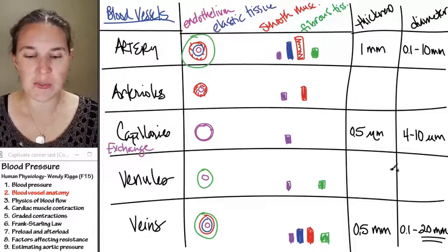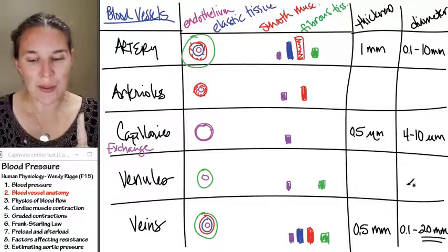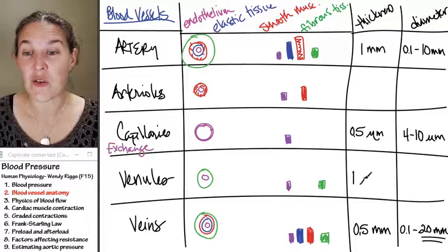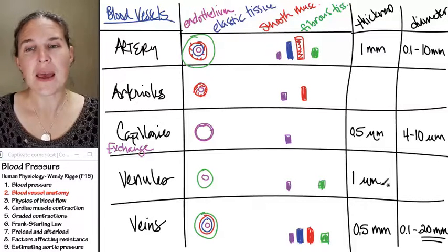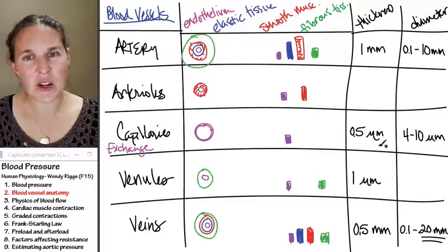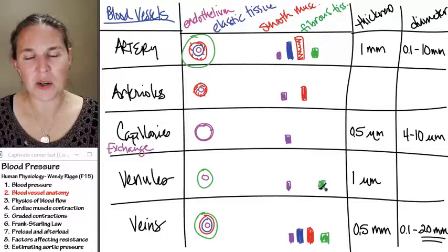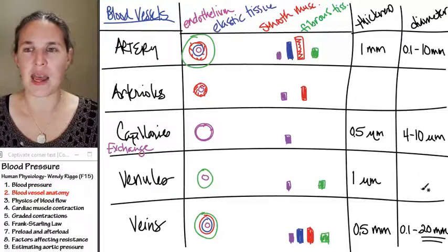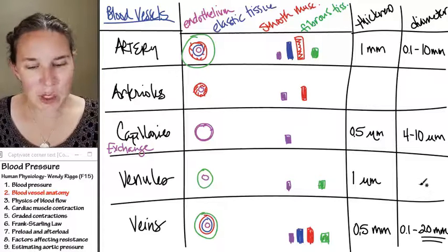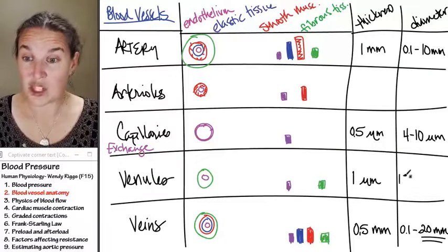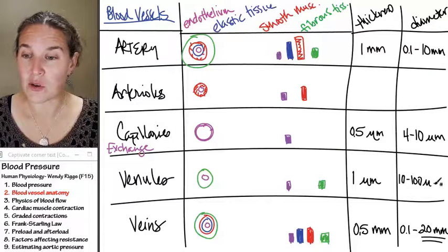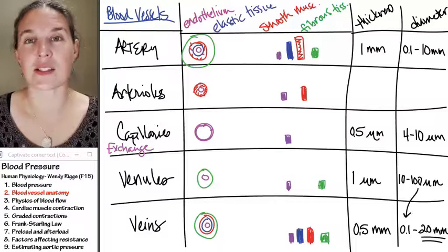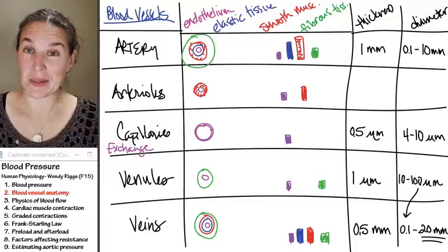Now, venules, you're going to expect them to be smaller. We're going back into micrometer land. The venules have a thickness of about one micrometer. Makes sense, not half a micrometer like a capillary, but one micrometer because we added a half a micrometer of fibrous tissue around the capillary. The diameter of a venule can range from 10 to 100 micrometers. Guess what 100 micrometers is? 0.1 millimeters, same thing.